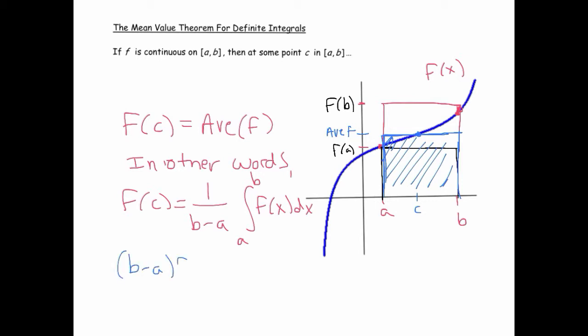If we mess with this equation a little bit and multiply both sides by (b - a), you get that. Here on the left is just a rectangle—a rectangle with base (b - a) and height f(c). We're basically saying the integral can always be equivalent to the area of some rectangle, and that rectangle can be determined by a y-value whose x-coordinate is somewhere on that interval.